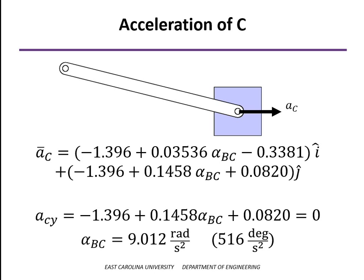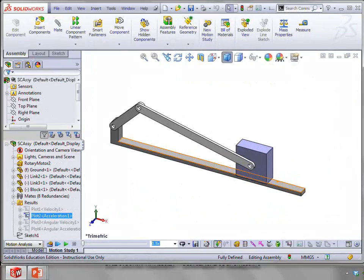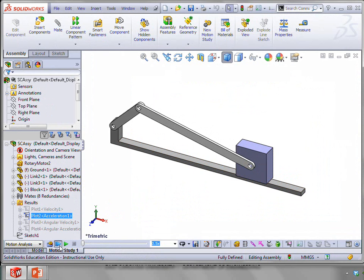The angular acceleration turns out to be positive 9.012 radians per second squared. And since our SOLIDWORKS simulation shows the angular units in degrees, we can convert that to 516 degrees per second squared. And let's compare that to what we get out of the SOLIDWORKS simulation.